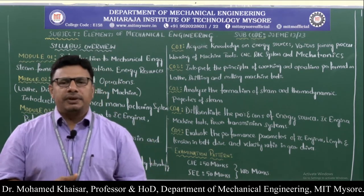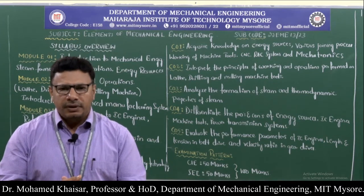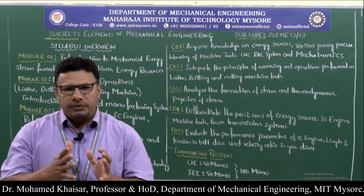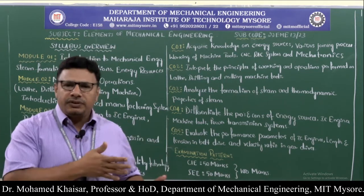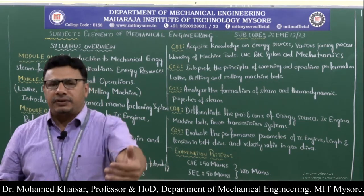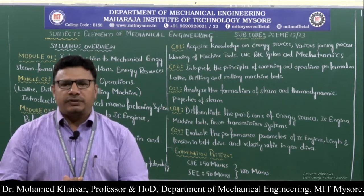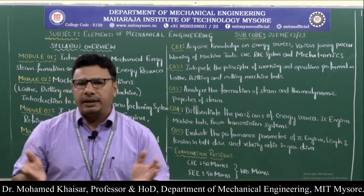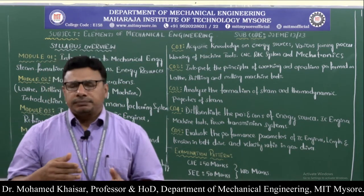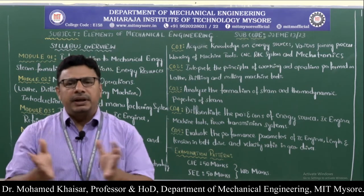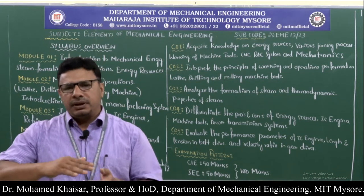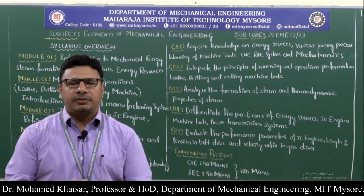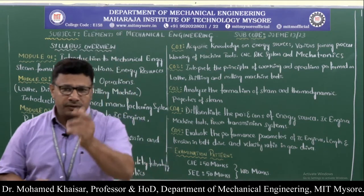These two branches, along with electrical engineering, are called core branches. Core branch means these are branches existing right from the existence of this world and will remain till its last day. Without these branches, nothing is going to progress. Everything revolves around mechanical, civil, and electrical. Due to supply and demand, some variation in scope might occur, but the application and importance of these branches will never fade from our lives.